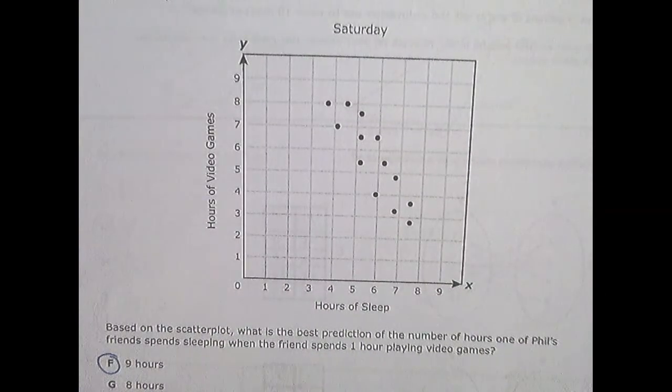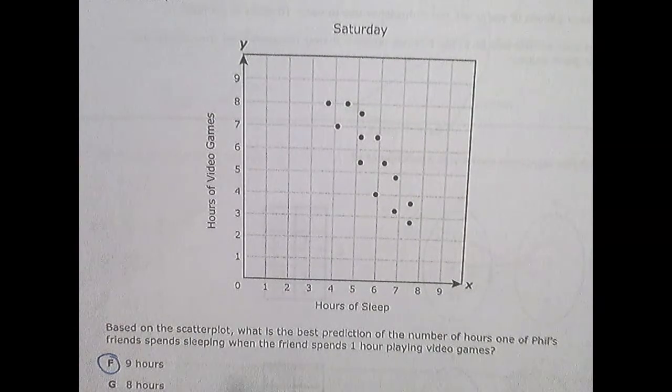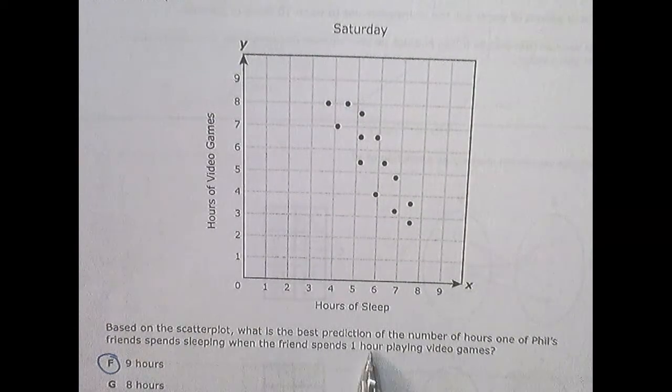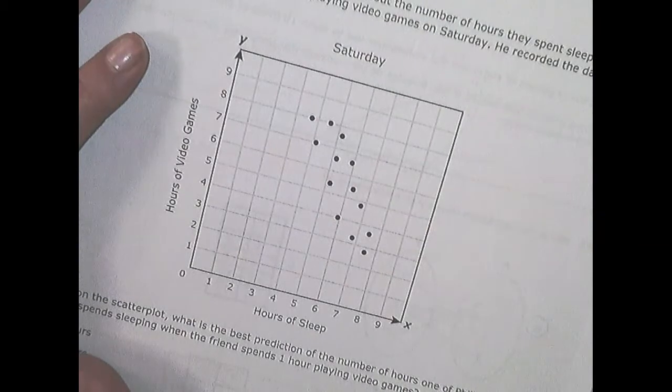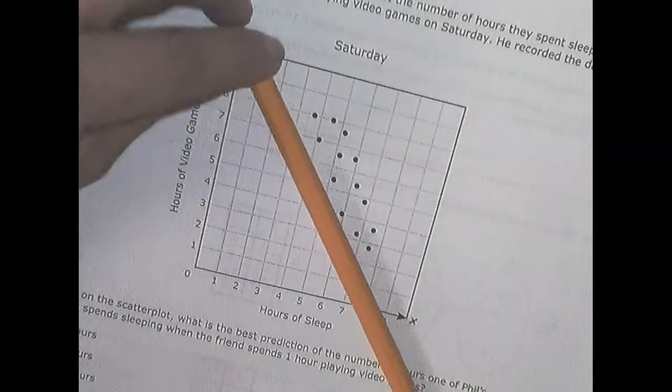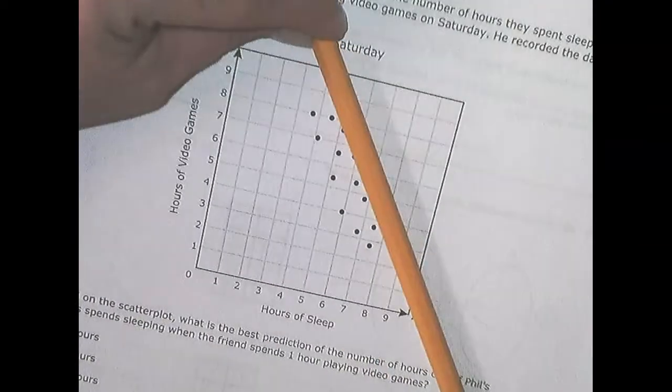Question 32. He's collecting data from several of his friends about the number of hours they spent sleeping and the number of hours they spent playing video games Saturday. He records the data on the scatter plot. Based on this scatter plot, what is the best prediction of the number of hours of Phil's friends spent sleeping when one friend is one hour playing video games?